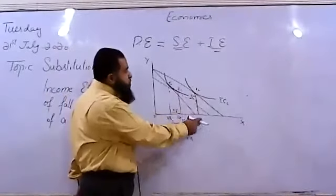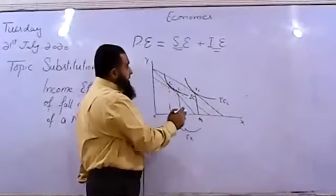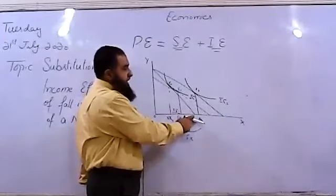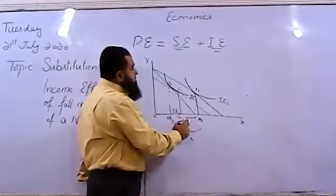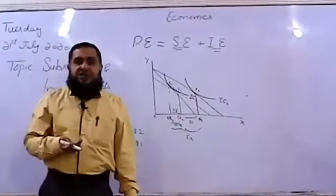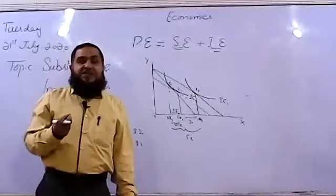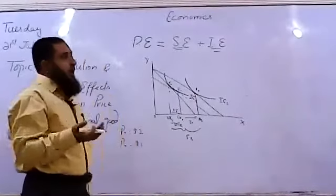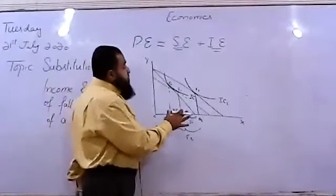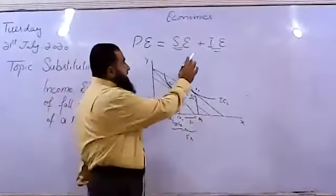The consumer is now consuming at E2 with five units of X. Finally, at the new equilibrium E3 he consumes eight units of X. These three additional units — from E2 to E3 — are due to the increase in real income caused by the fall in the price of X. When nominal income remains the same but real income increases and quantity demanded of X increases, that is the income effect.